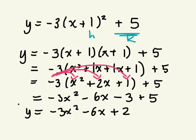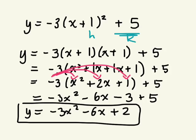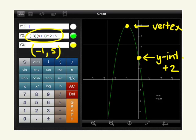And this is in standard form. And we just learned that c is the y-intercept. And if we look at the graph, it verifies that, yes, this parabola hits the y-axis at positive 2.